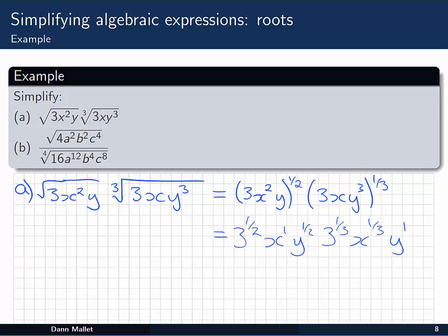Now we can combine the pieces that work together: 3's, the x's, and then the y's. So we have 3 to the 1/2 plus 1/3. Again, we're using the index laws here. x to the 1 and 1/3, that's going to be x to the 1 plus 1/3, and y to the 1/2 plus 1.